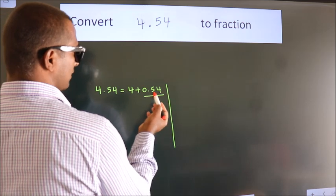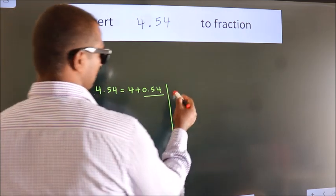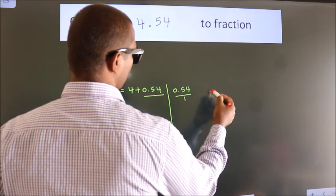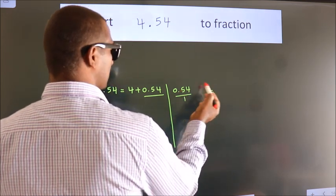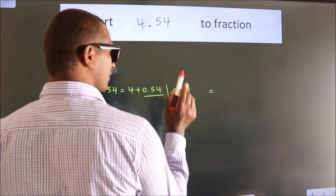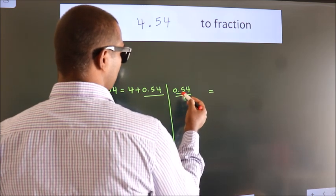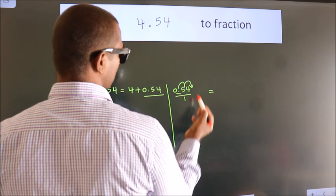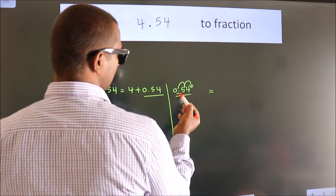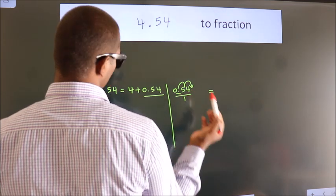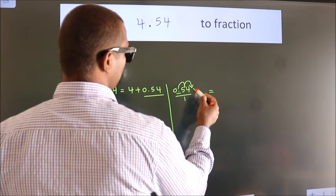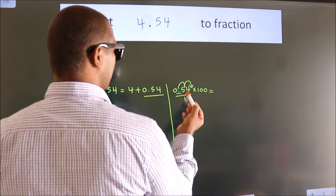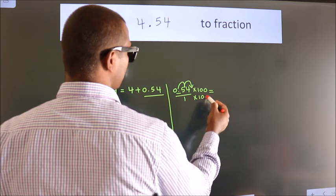Next, convert this to fraction over here. So 0.54. To convert this to fraction, for that we have to move this decimal after 1, 2 numbers. To move this decimal after 2 numbers, for that, multiply it with 100. Whatever you are multiplying in the numerator, in the denominator also do the same.